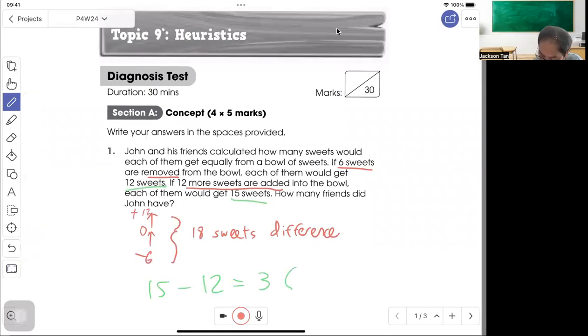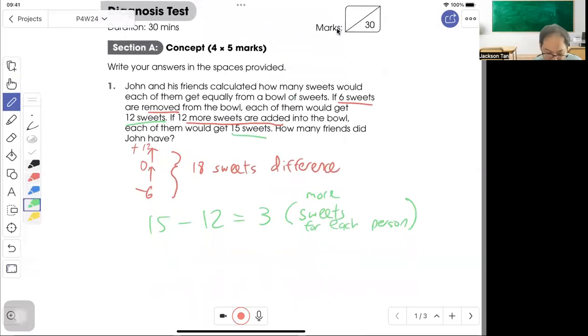So each of them get 3 more sweets for each person. So the 18 difference divided by the 3 more sweets, so 18 divided by 3, you know that there are 6 people altogether. Minus away John, so John will have 5 friends. Answer is 5 friends.